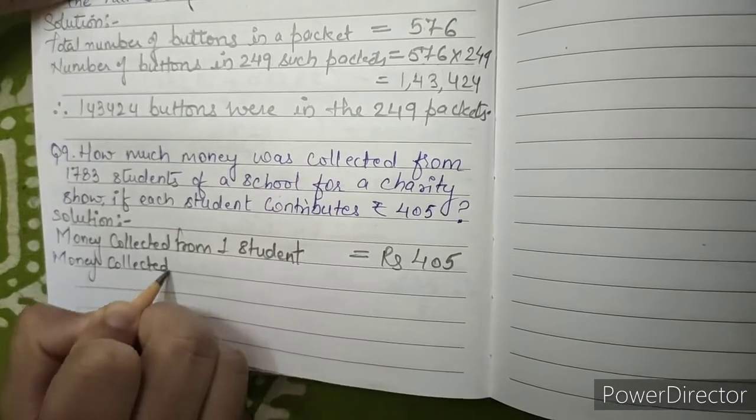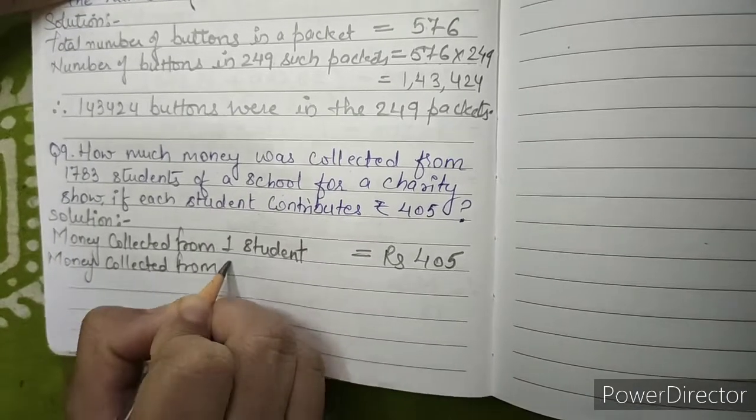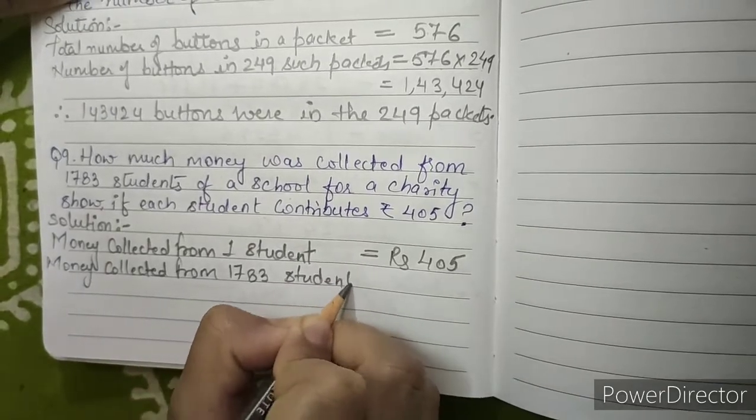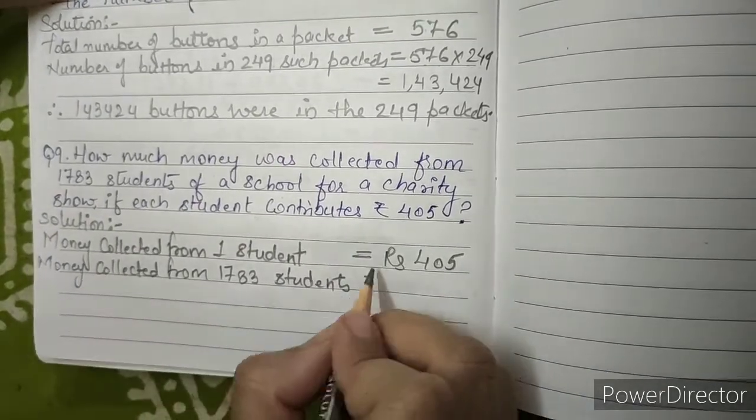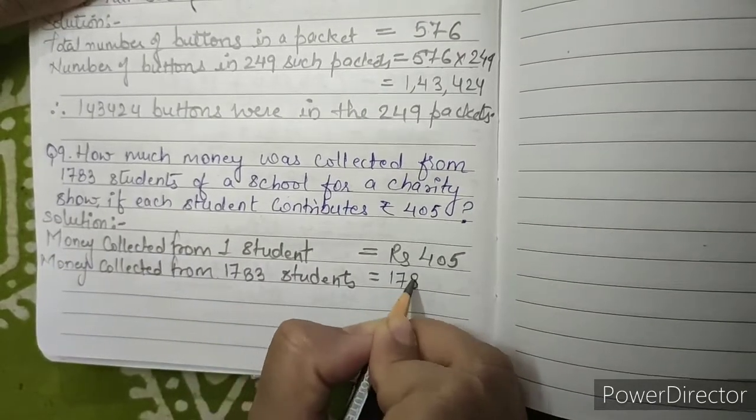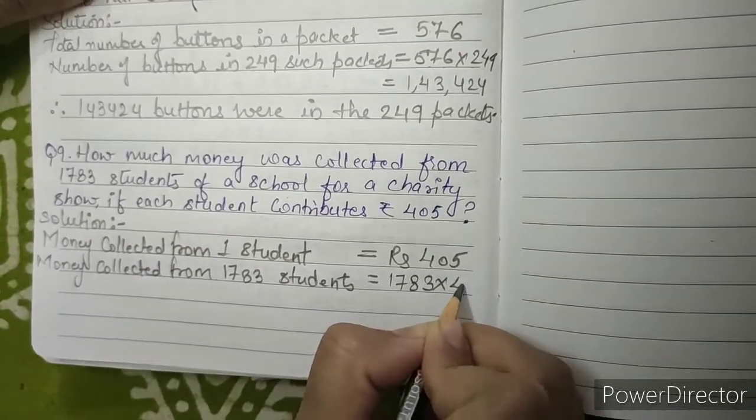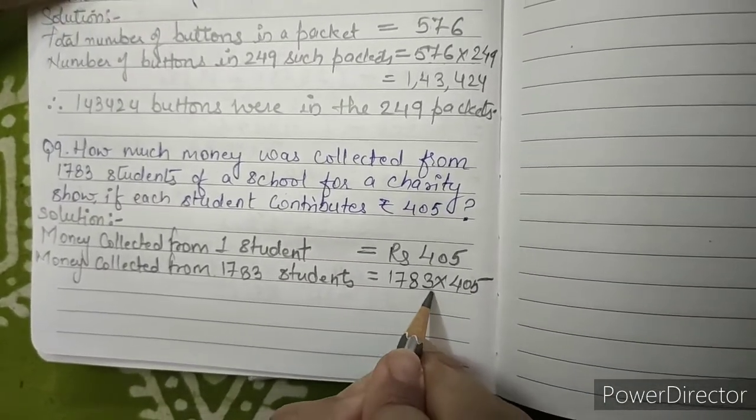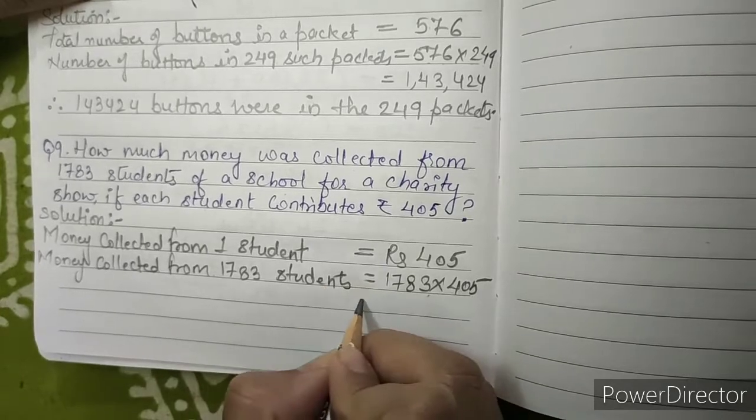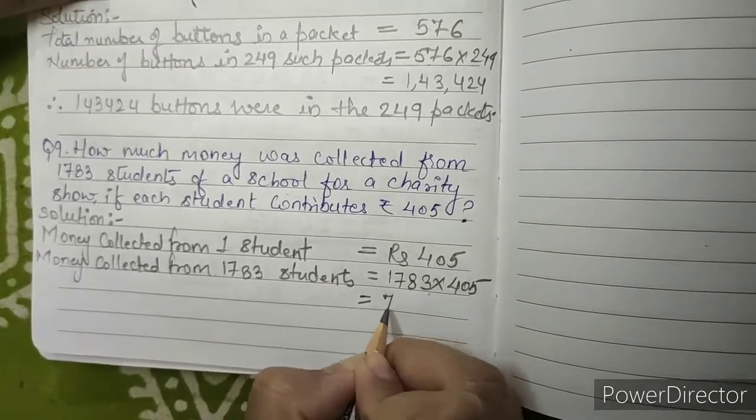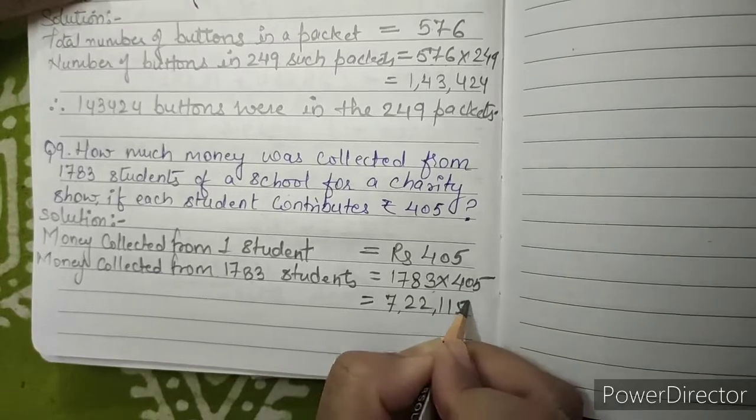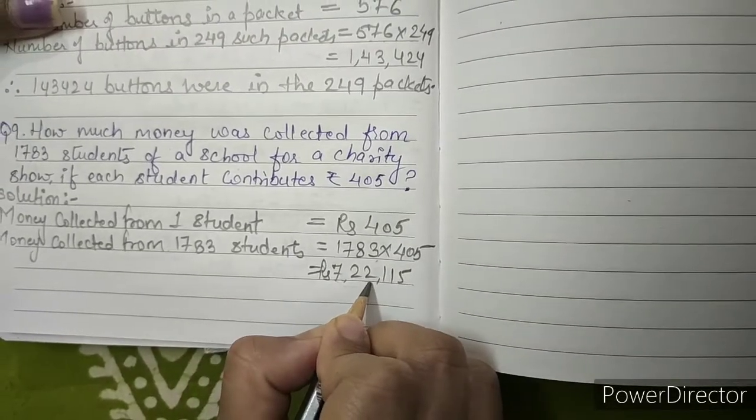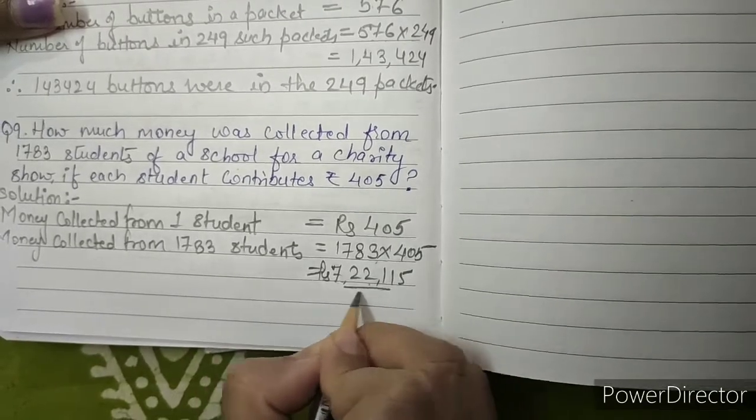Money collected from 1,783 students equals 1,783 multiplied by 405. After multiplying 1,783 and 405 we got our answer as Rs. 7,22,115.